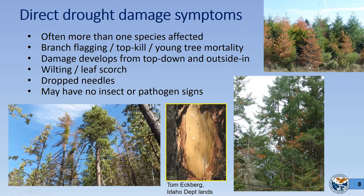If you see dead trees with completely red crowns, bark beetles are probably present. But in these photos, drought was the driving factor. In some cases, removing bark to look for bark beetle galleries found none — and no wood borers either. Look for these signs to differentiate drought damage from bark beetle damage, though it can be difficult. The two often work in tandem.